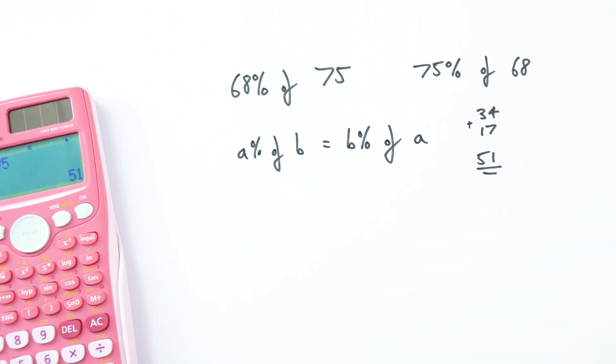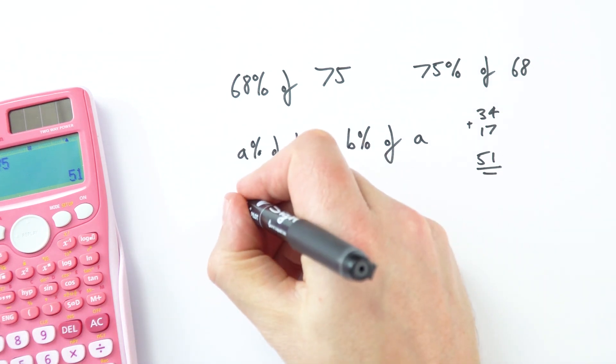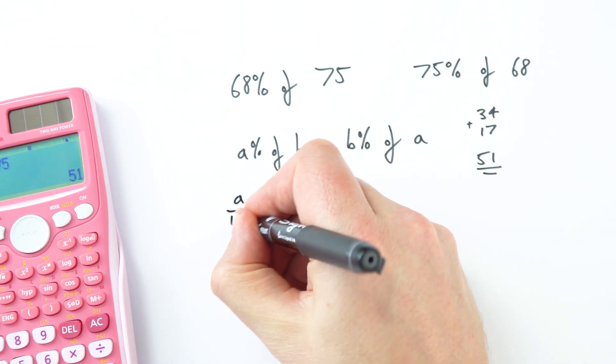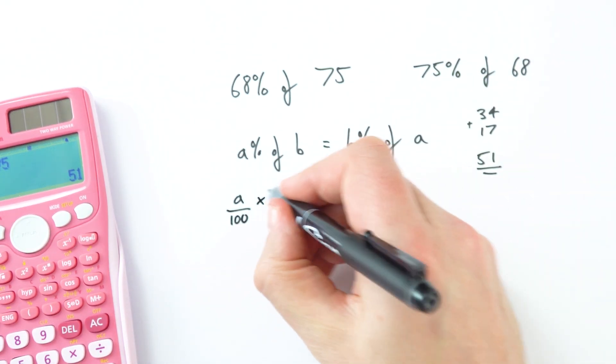So why is that? Well there must be something mathematical about this. Well there is, because A percent of B is the same as A divided by 100 multiplied by B.